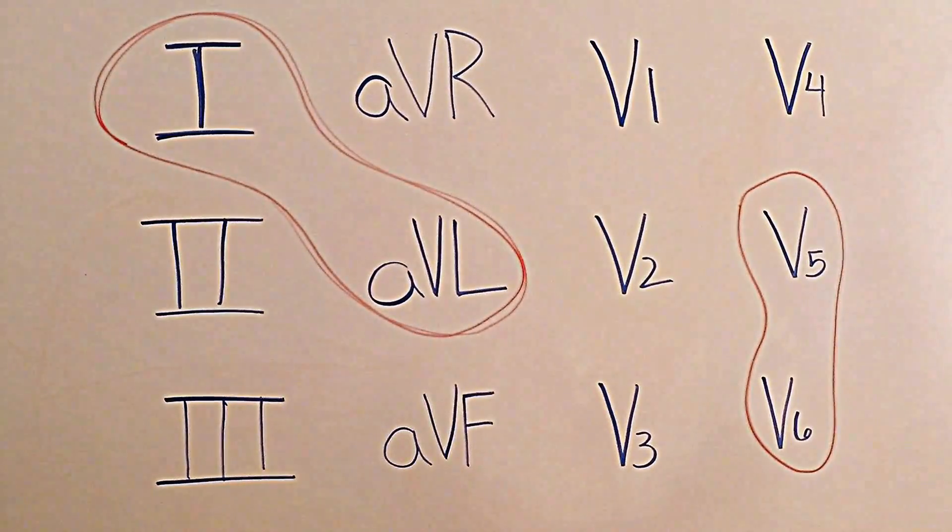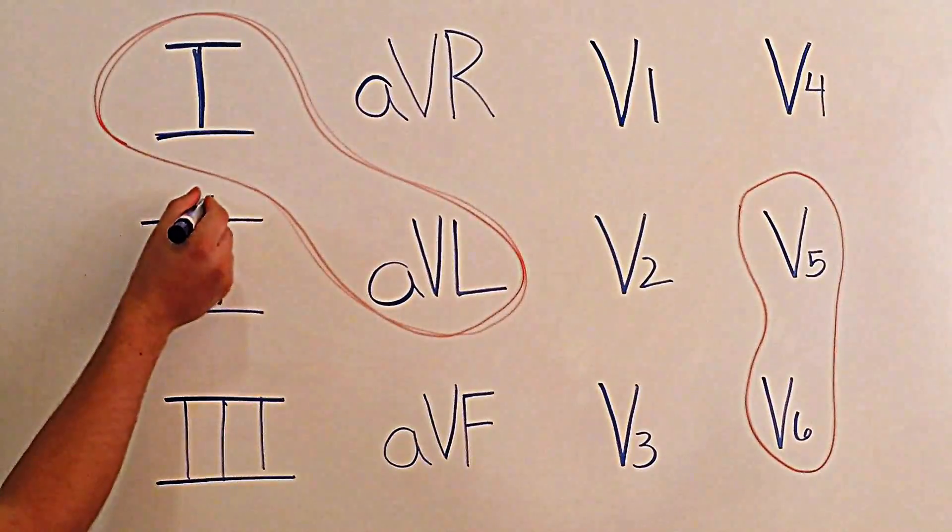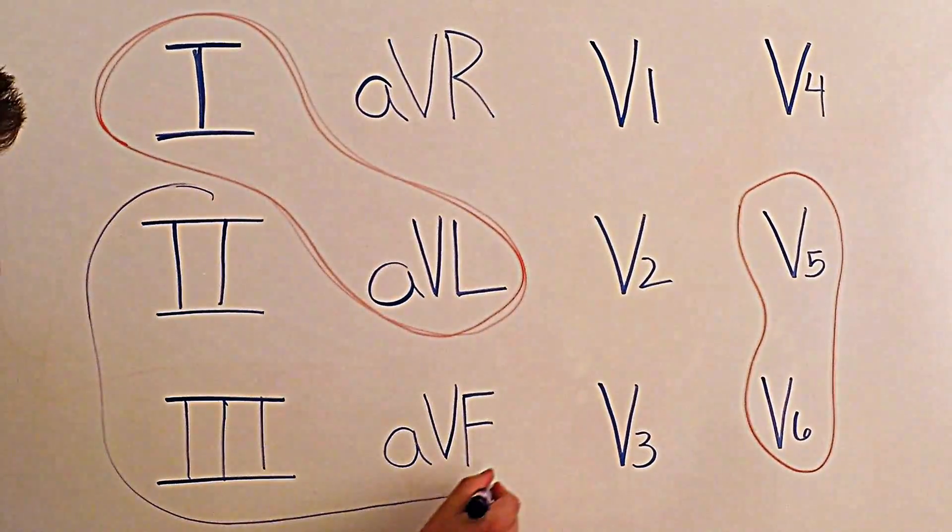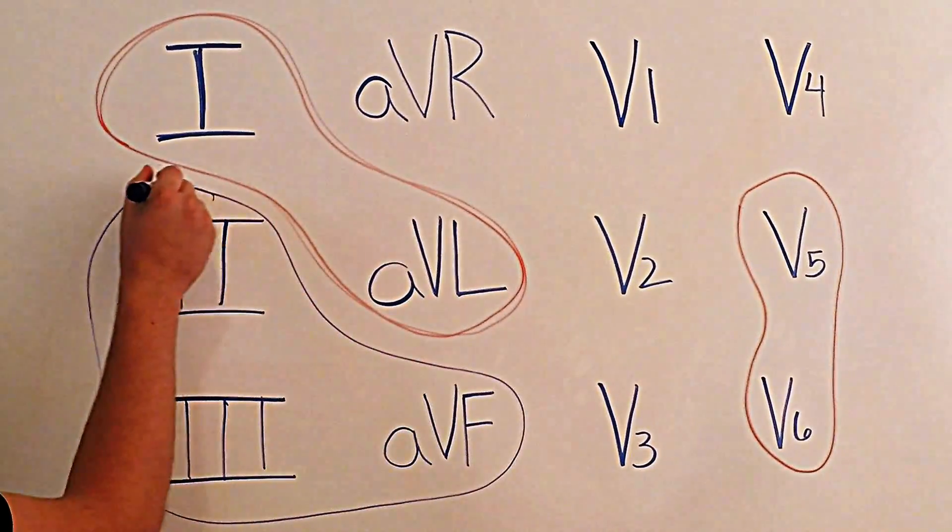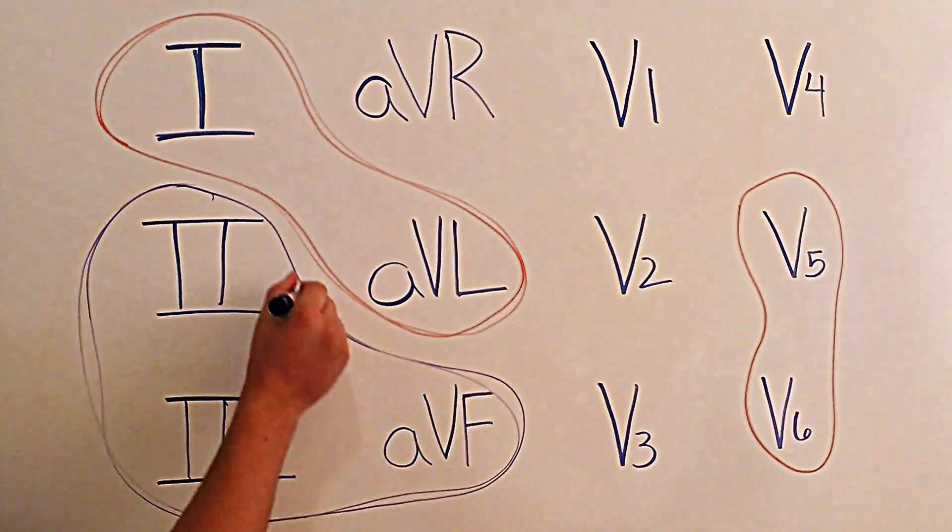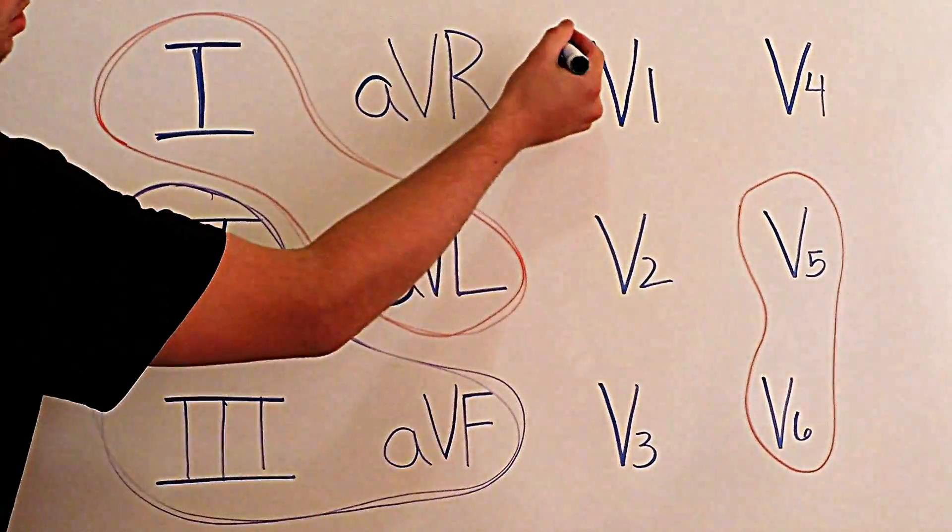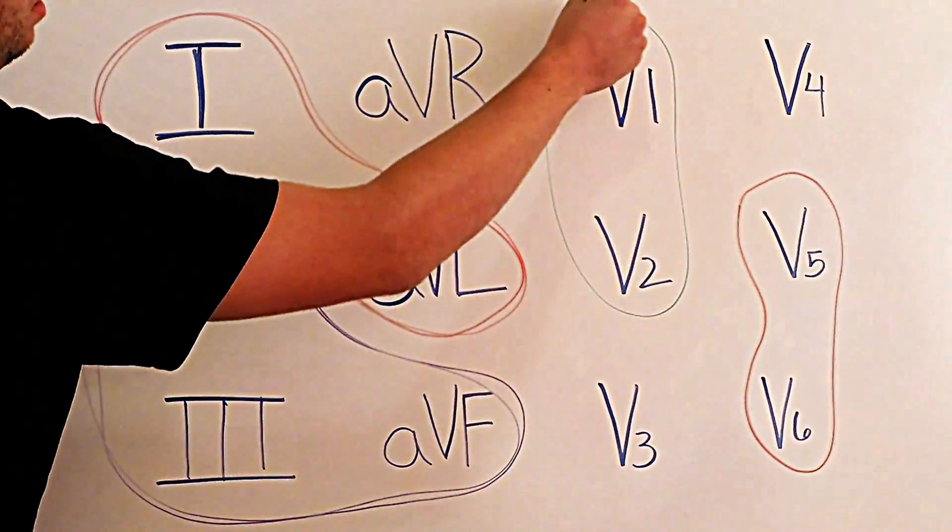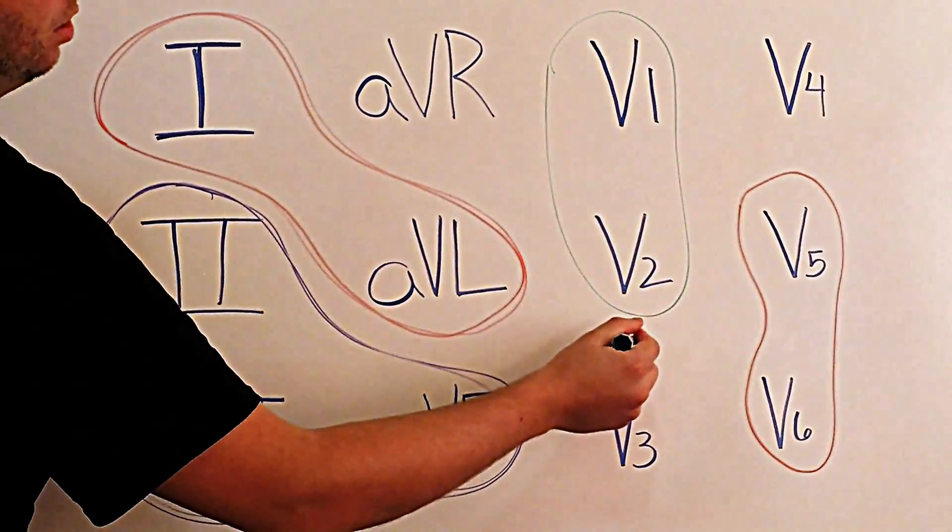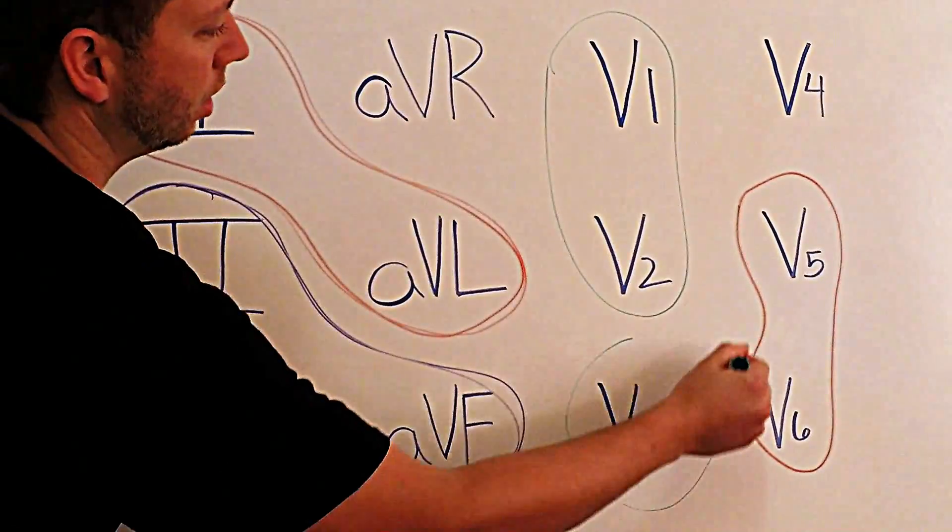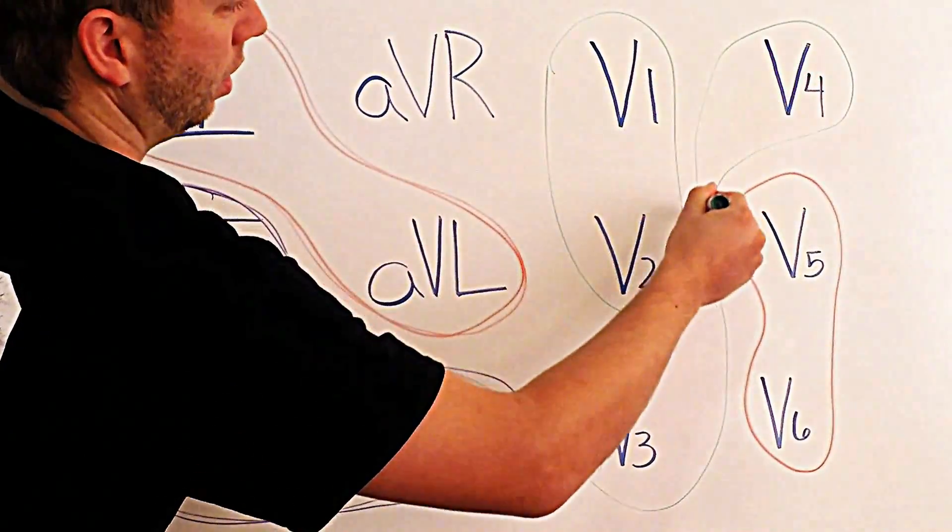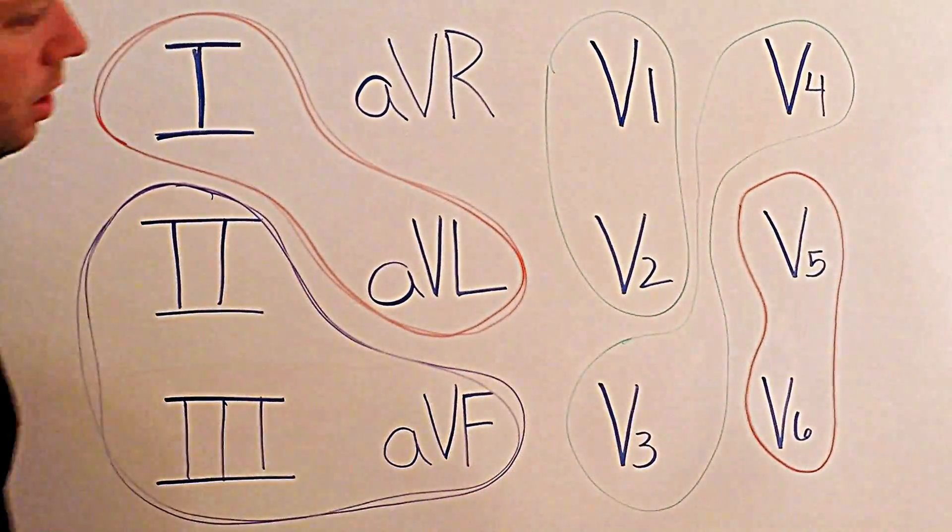You don't have to do it in a different color, I just like to kind of color coordinate to show you guys what I'm doing a little better. Now you're going to circle leads II, III, and aVF.